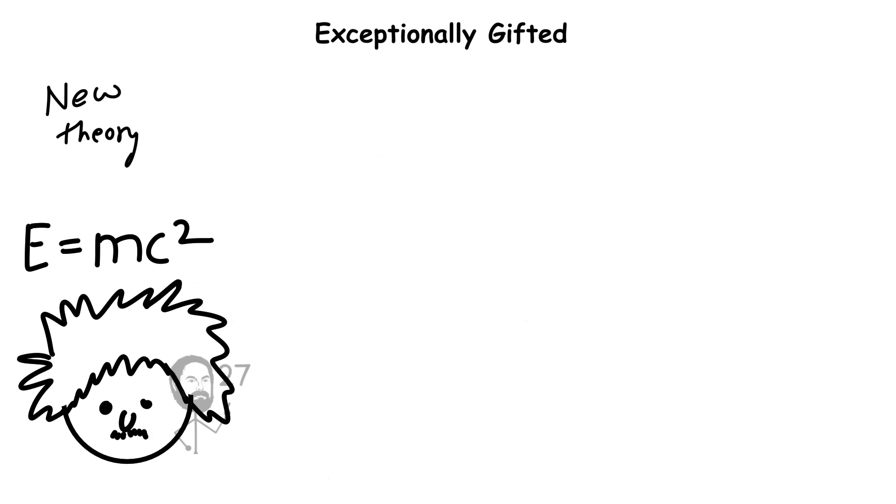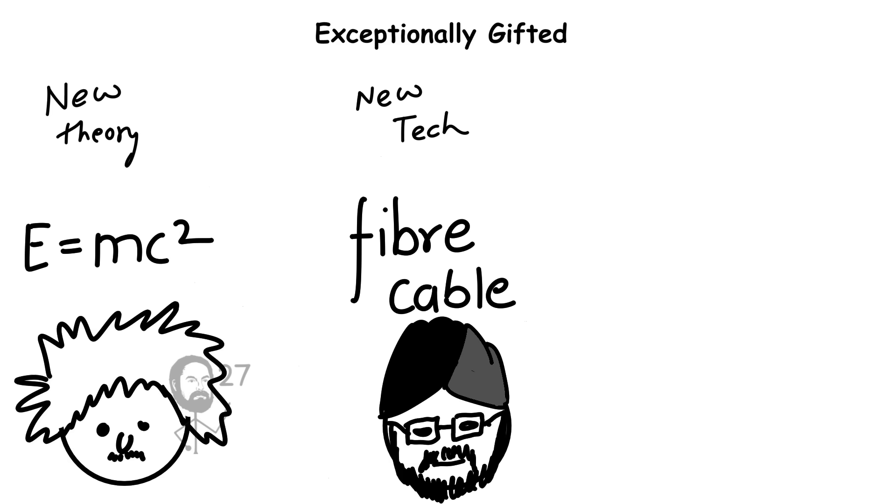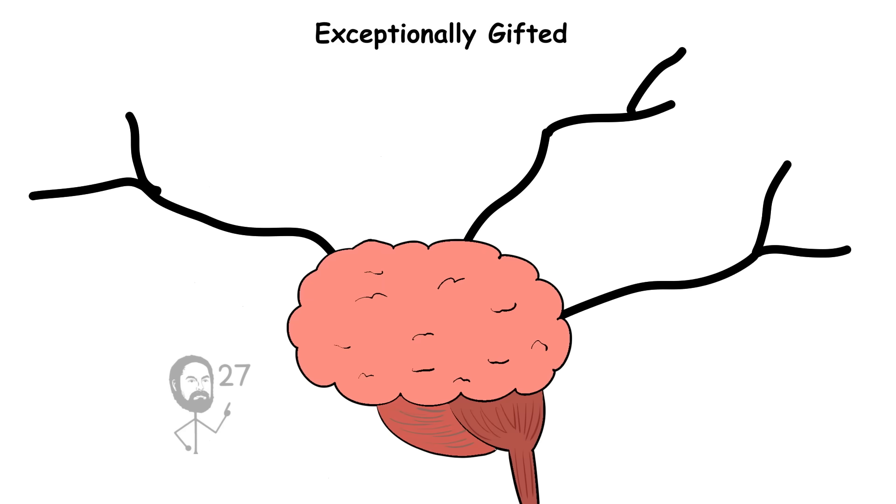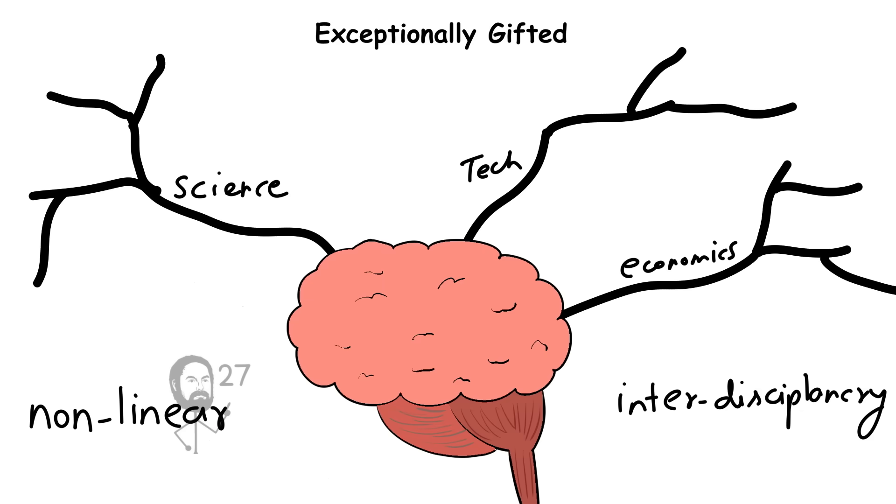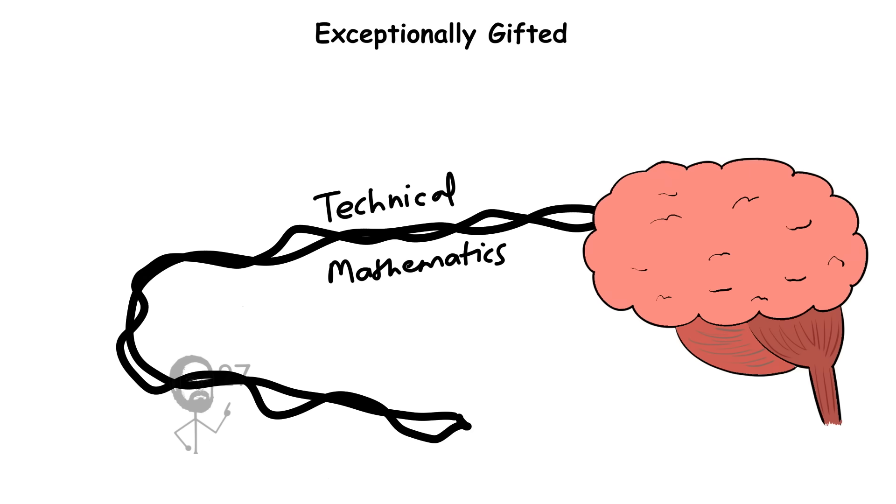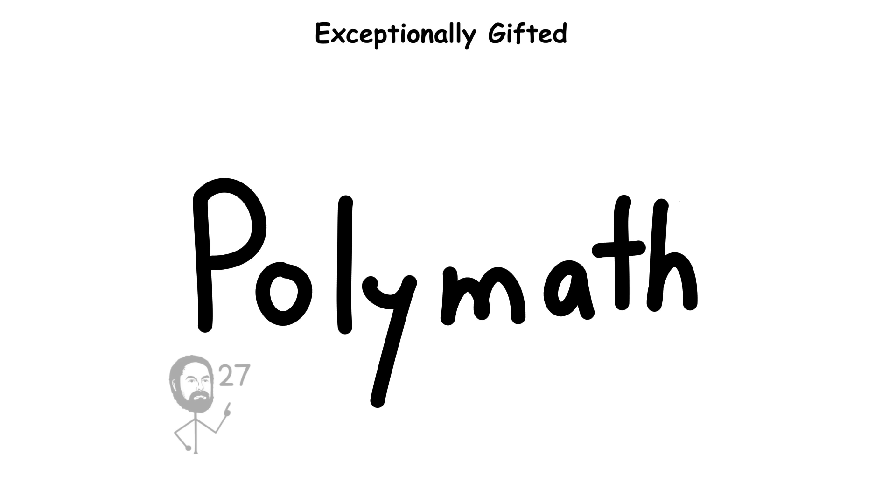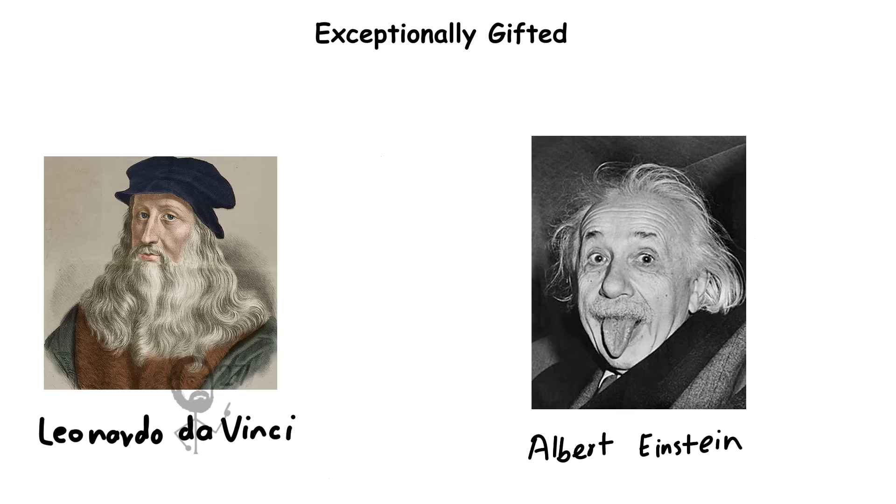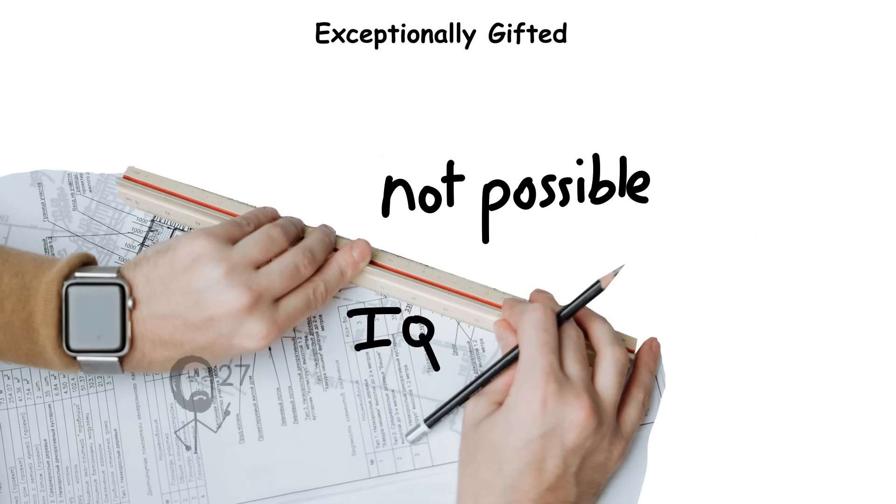People in this range are often the originators of new theories, technologies, or systems of thought. Their thinking tends to be non-linear and interdisciplinary. They naturally merge ideas from different fields to form new perspectives. Historically, polymaths such as Leonardo da Vinci or Albert Einstein are often associated with this level of cognition, although true measurement is impossible retrospectively.